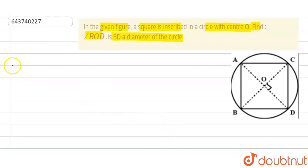So, let's start the solution. Now, in the given figure, we can extend the straight line OB to BD and CO to CA.